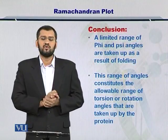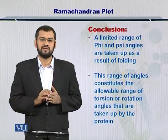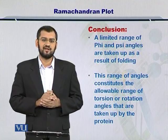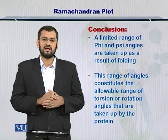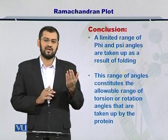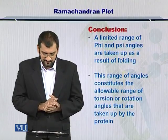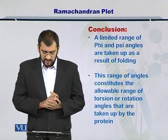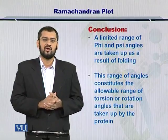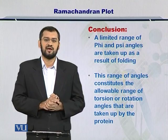In conclusion, the take-home message is that Phi and Psi angles have a very limited range in biologically viable proteins. These Phi and Psi angles can be classified as belonging to an alpha helix or a beta sheet — the secondary structures discussed earlier. This limited range of angles represents the only allowable torsion angle range, meaning it is the only conformation in which a protein can actually exist.